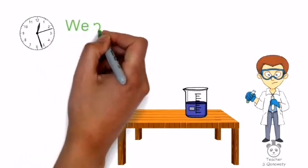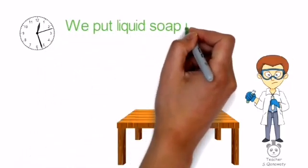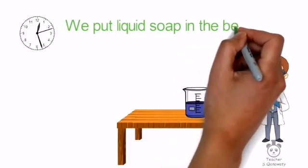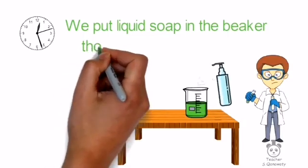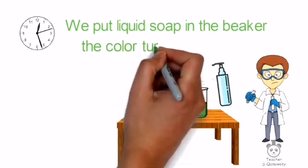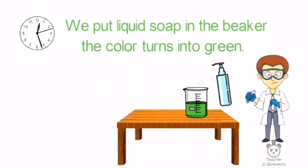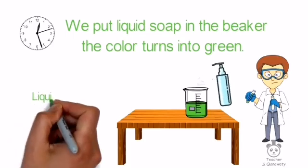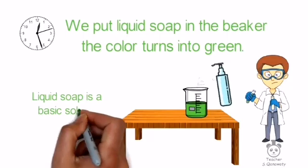Now let's execute the second experiment. We put some liquid soap in the beaker that contains our indicator. We wait a few minutes, then the color turns green. There is a color change! Our indicator turns green when it detects a basic solution. That's why we deduce that liquid soap is a basic solution.